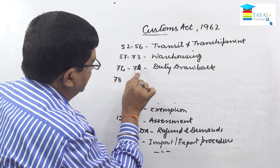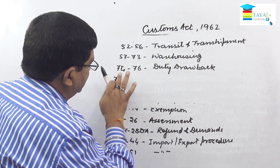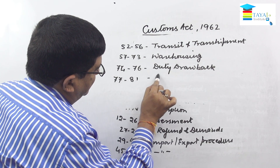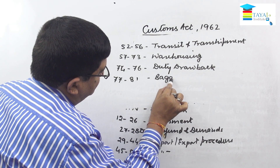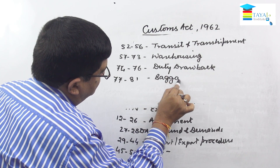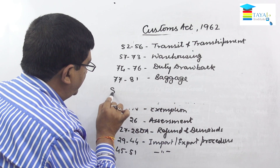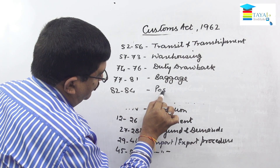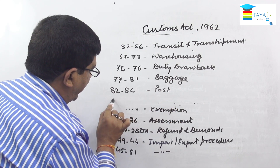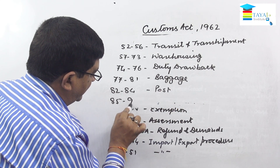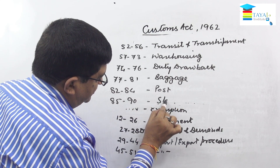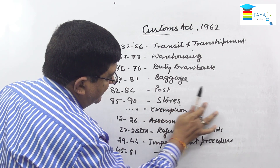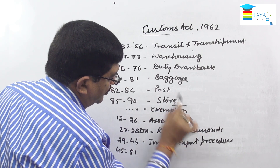Sections 77 to 81 relate to baggage. Sections 82 to 84 cover import and export by post. Sections 85 to 90 are about stores — and this is the end of your syllabus as far as the Customs Act is concerned in your exam.